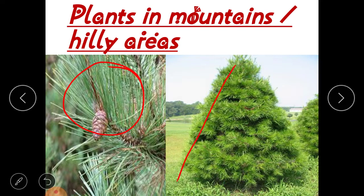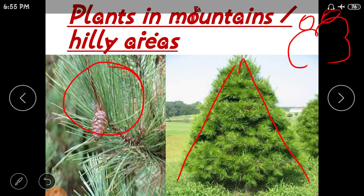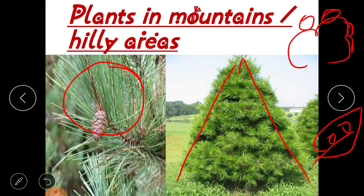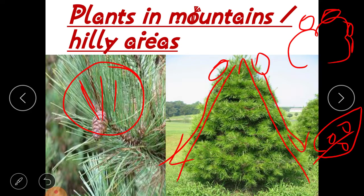The shape of mountain trees is conical. Why conical? Because these trees are found in mountains where snow falls. If the tree were round in shape or had broad leaves, snow would settle down on them and damage the trees. But because the leaves are like needles, the snow cannot settle down and slides off easily. So to protect the trees from being damaged by snowfall, they have needle-like leaves and a conical shape.